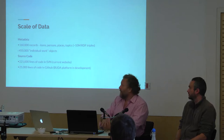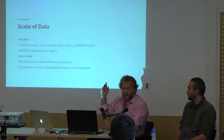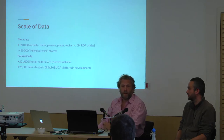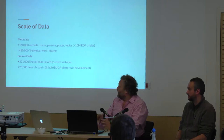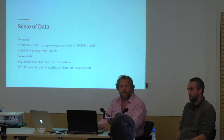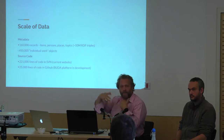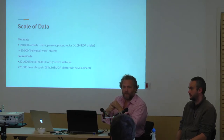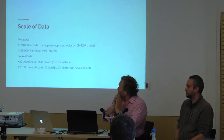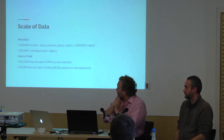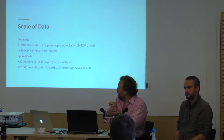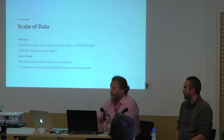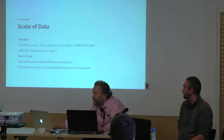Scale on the metadata: 160,000 records — items, persons, places, topics — which equals about 10 million triples and 450,000 individuals, meaning 450,000 individual work objects in the library. And the source code: 220,000 lines of code in our current platform. We're also developing an open source platform in GitHub which is 25,000 lines of code.